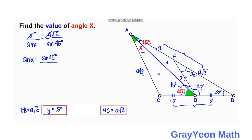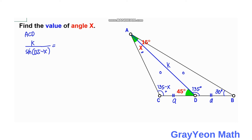We label side AD as K and apply the sine rule to triangles ADB and ACD. For triangle ACD: K over sine(135 minus X) equals CD over sine X. Rearranging gives the ratio A over K equals sine X over sine(135 minus X). For triangle ADB: A over sine 15 equals K over sine 30, giving A over K equals sine 15 over sine 30.